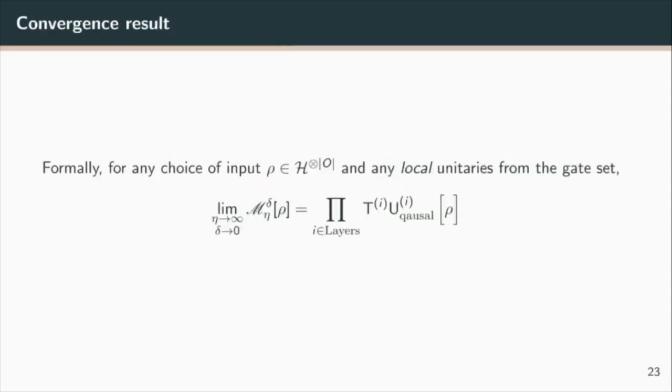Formally what we have is that for any choice of input and any local unitaries from the gate set, that is choice of measurement bases, our measurement protocol converges to this unitary in this ideal limit.